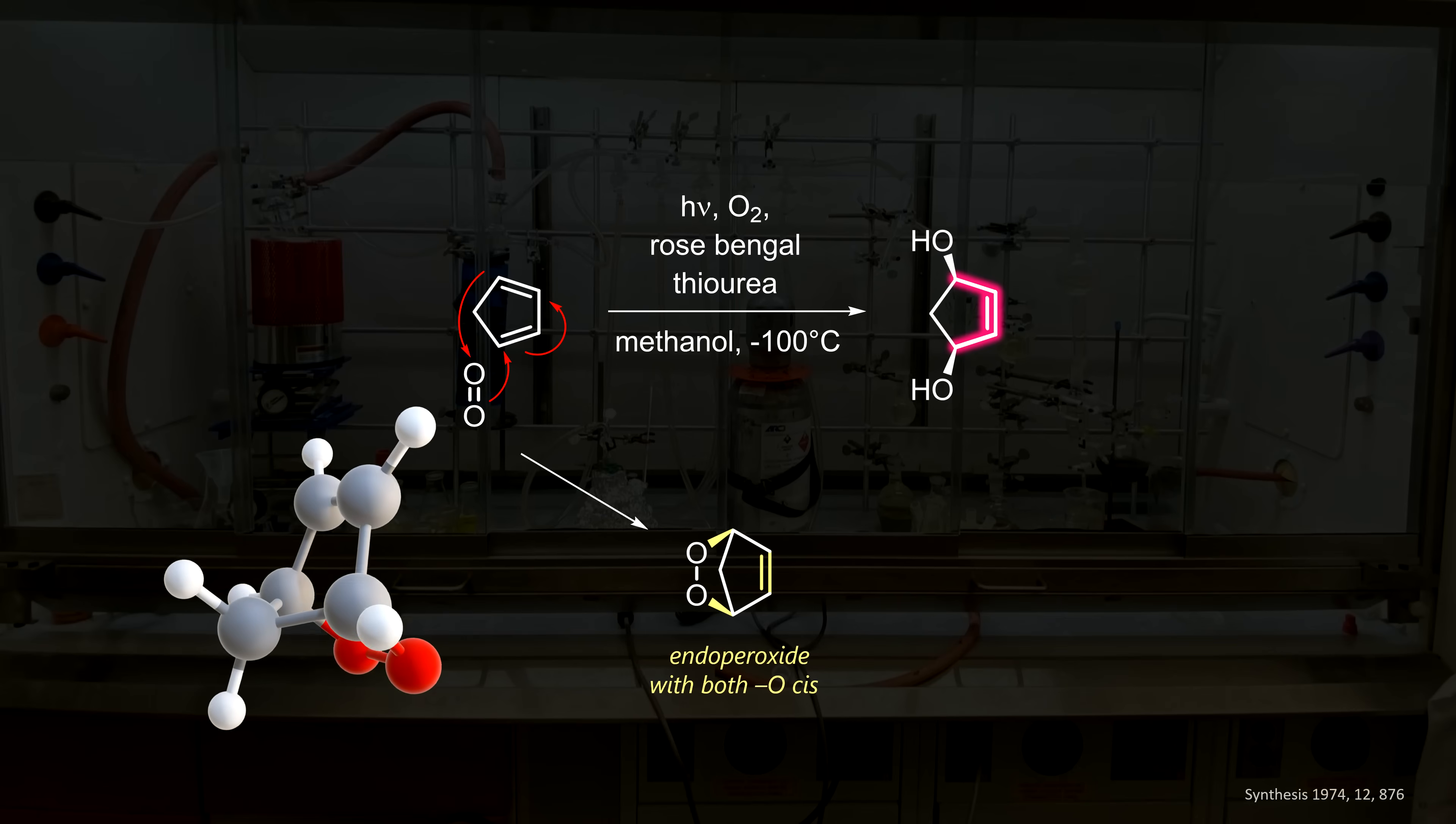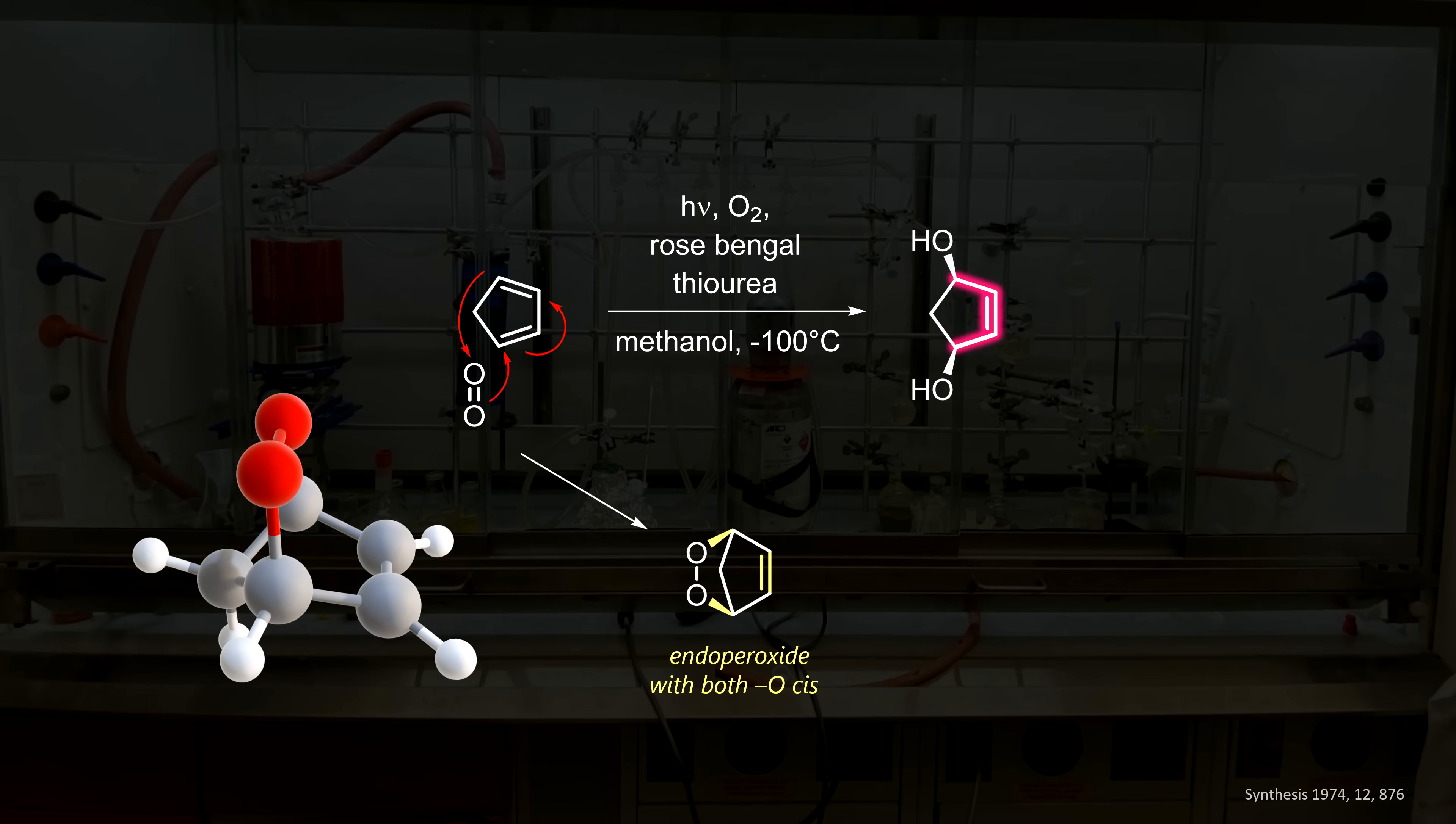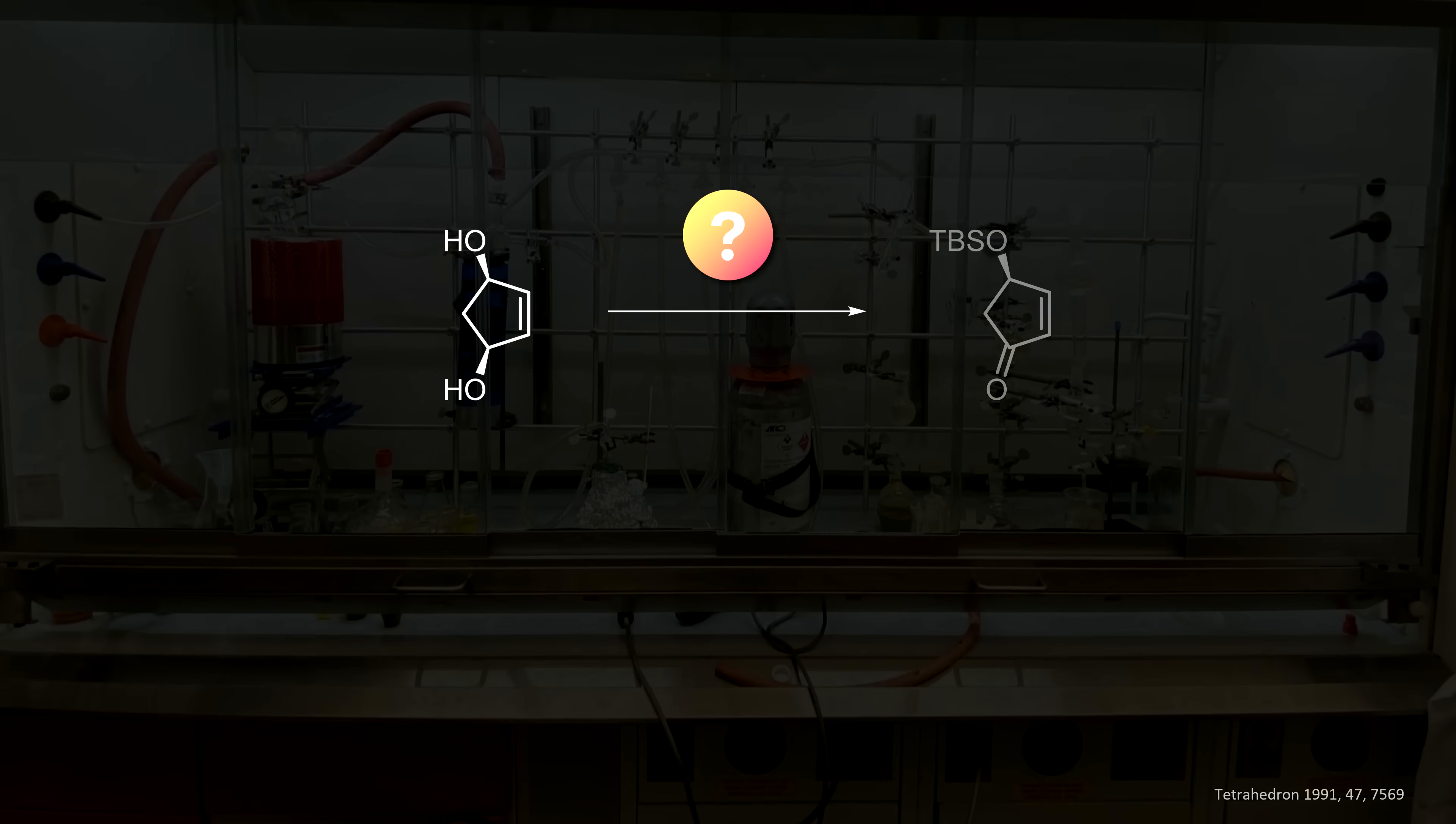To get to the diol, we just need to cleave the weakened oxygen-oxygen bond, and this can be done by addition of thiourea. Nucleophilic addition to one of the oxygens breaks down the peroxide, and because we run the reaction in methanol, there are plenty of hydroxyl groups in our solution that can exchange the thiourea and release the diol. Although this molecule has two stereocenters, it is not chiral due to the presence of a mirror plane. These are called meso compounds.